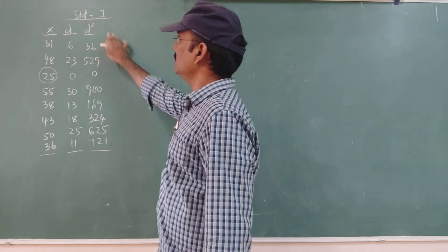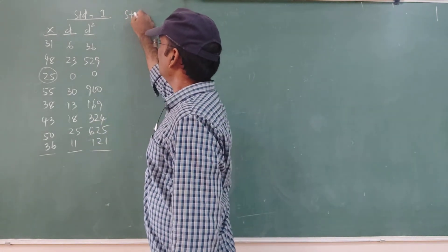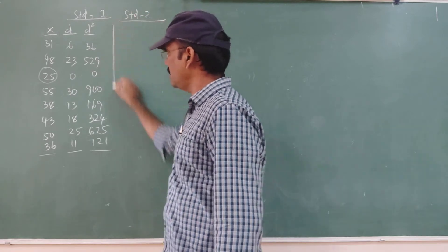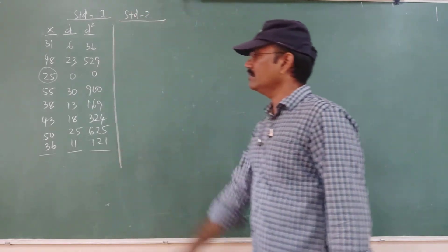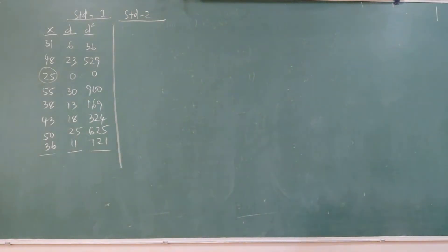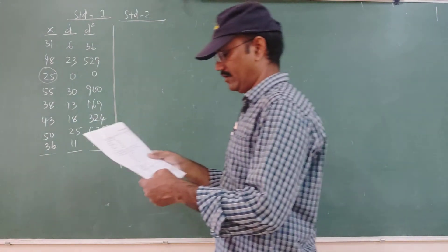That was Standard 1. Now Standard 2 — the second variable. These values are up to Standard 1. Now I will take the Standard 2 variable. We need to check the question once again.